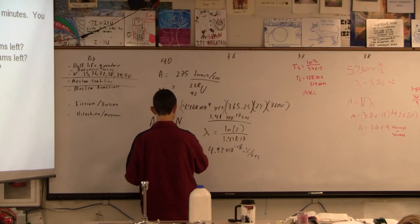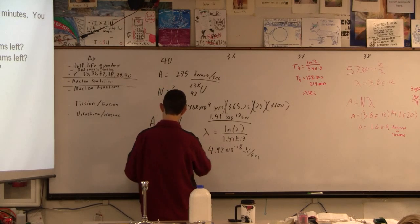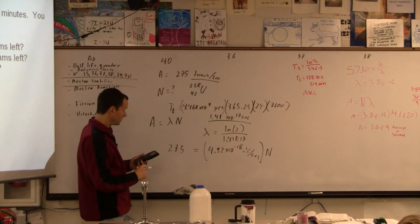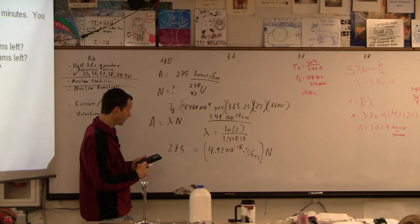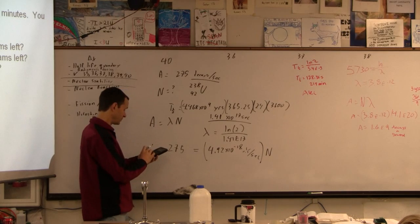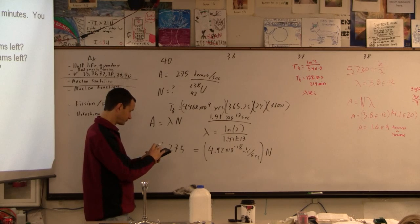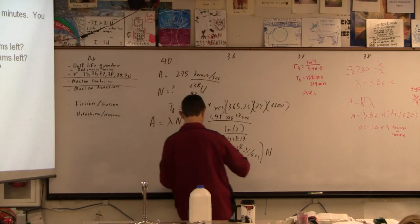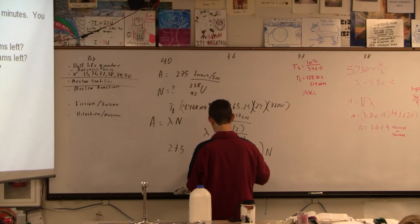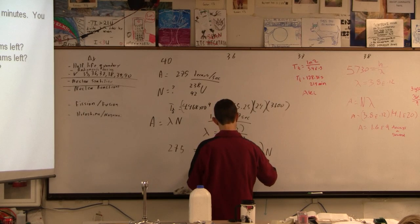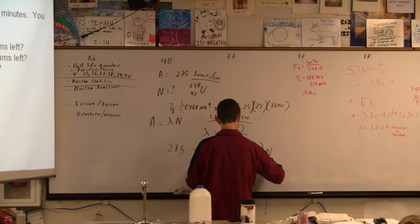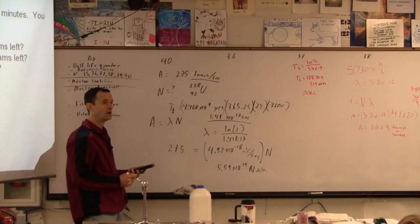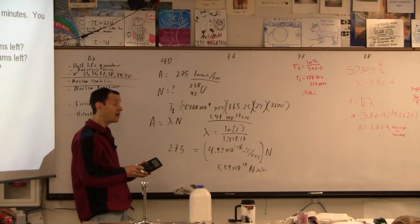So if 275, I'm using this formula now, is lambda times N, then I guess we divide 275 by that very small number. So 275 divided by the answer I just got is a lot of nuclei, I'll say nuclei, not atoms. Is that very much? It's not very much, that's a lot of nuclei.